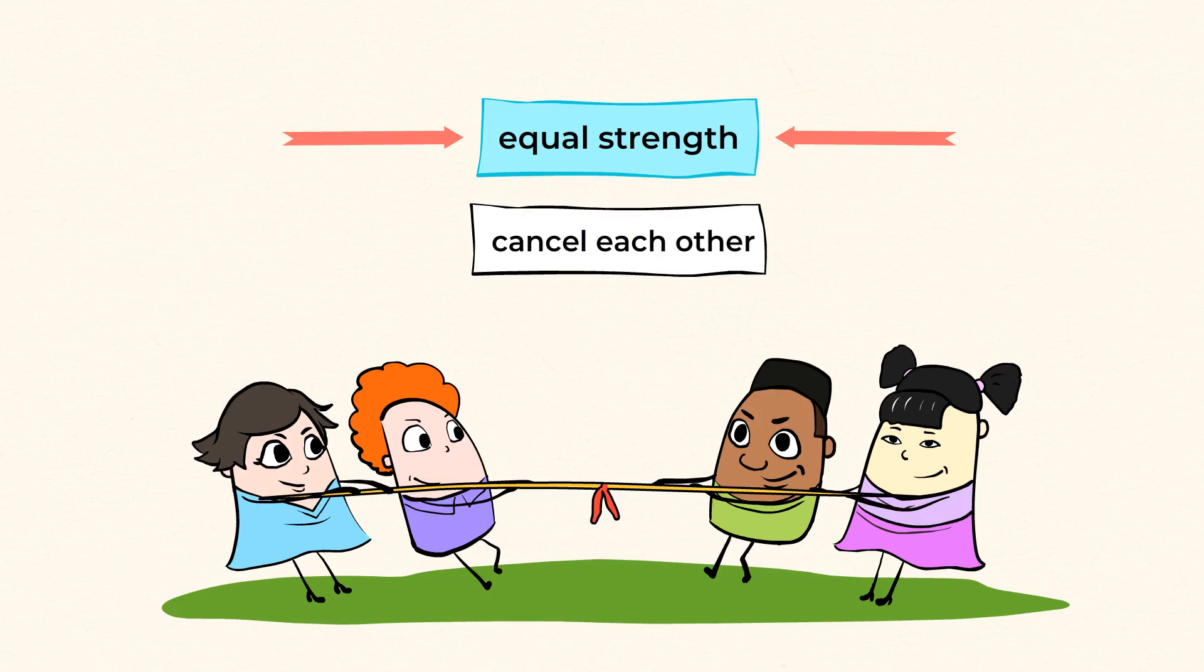When both teams are pulling equally on the rope, even though they are pulling the rope in opposite directions, if they both pull with exactly the same amount of strength, they do not cause a change in motion.